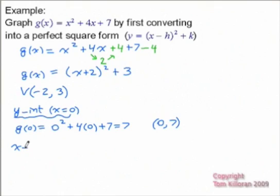And then for x-intercepts, I'm going to leave it in the perfect square form for this one. I think it'll be easier. We're going to let y equal 0, or the entire function equals 0. And we're going to get 0 is equal to x plus 2 all squared plus 3.